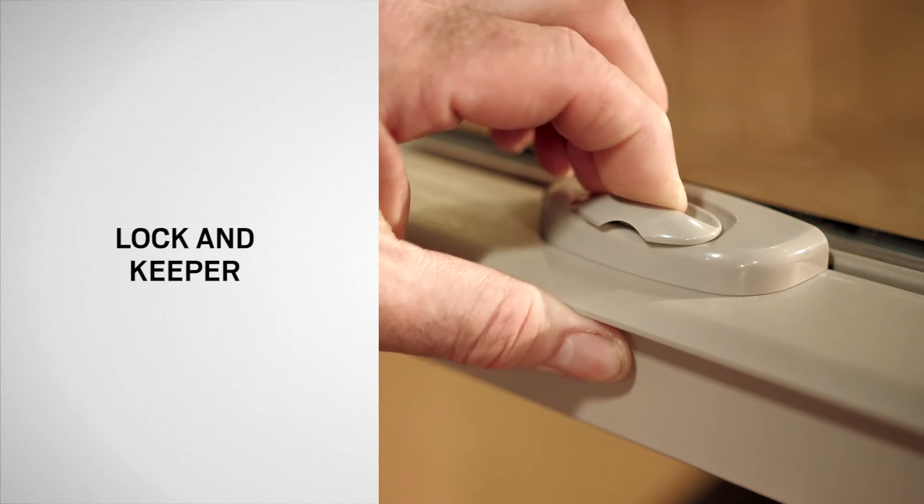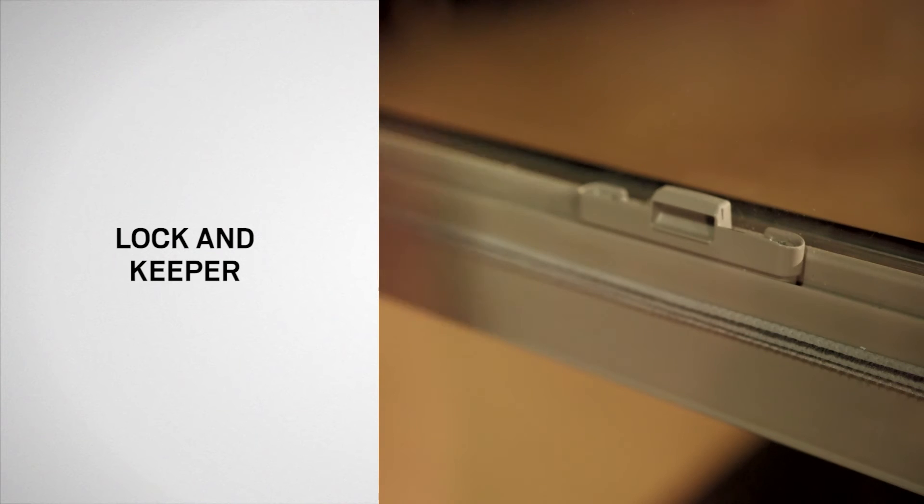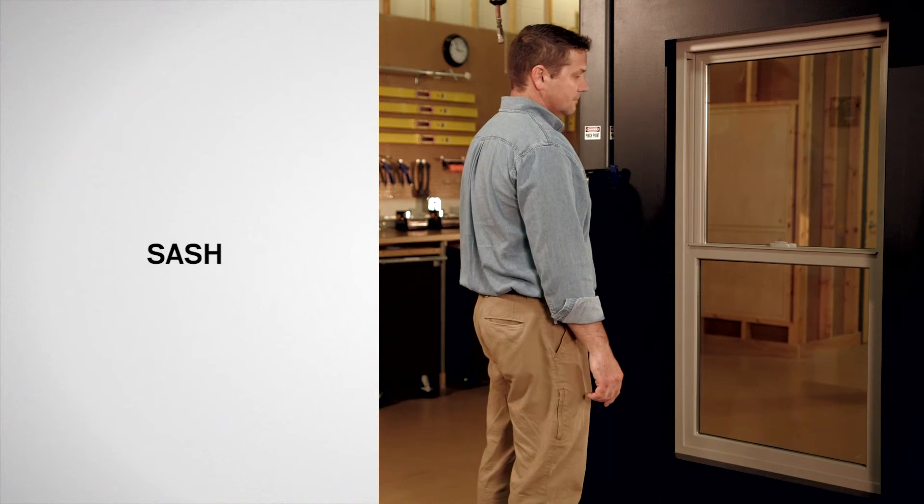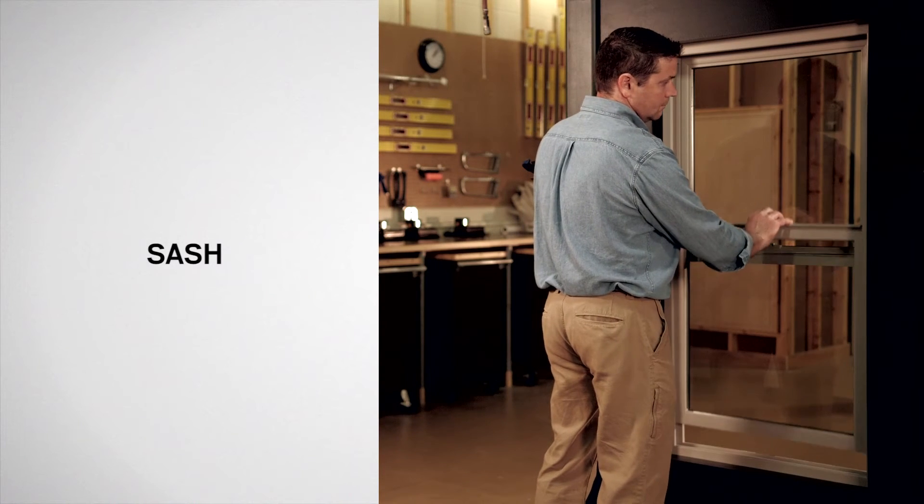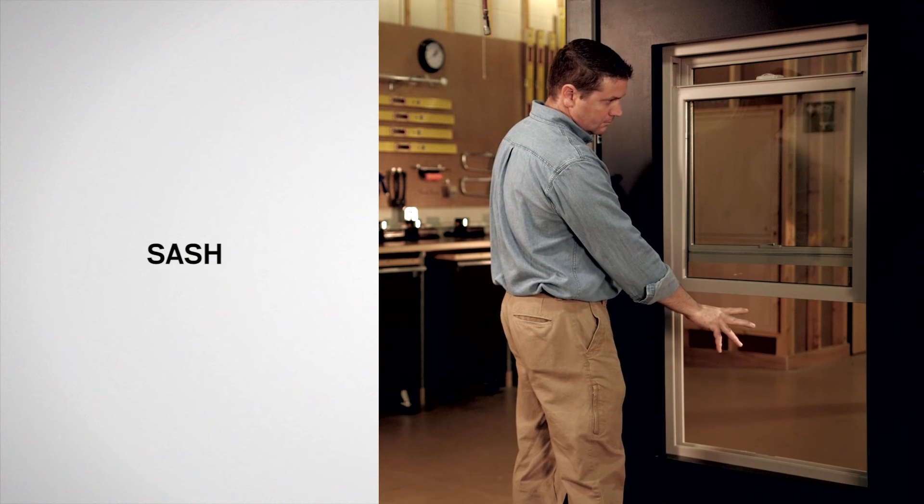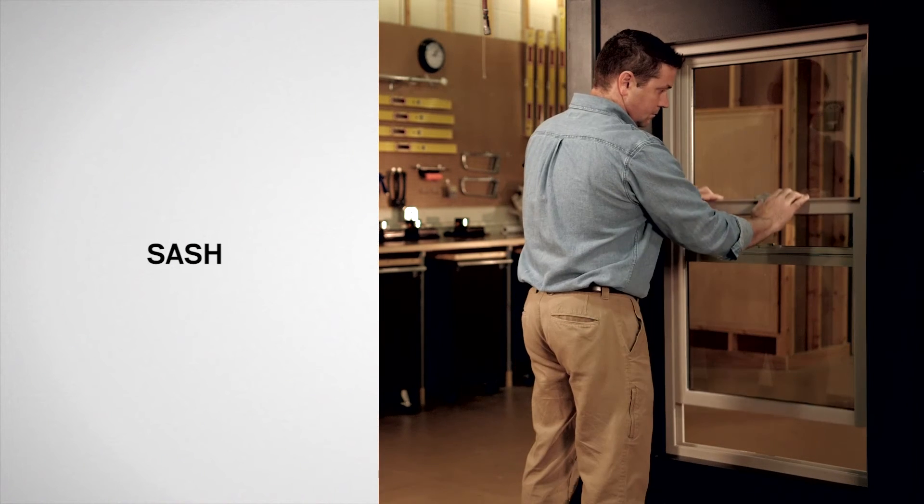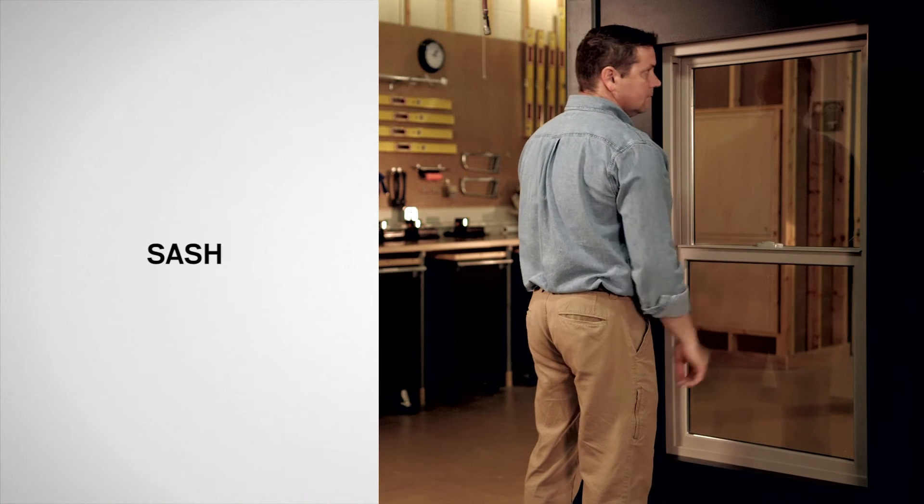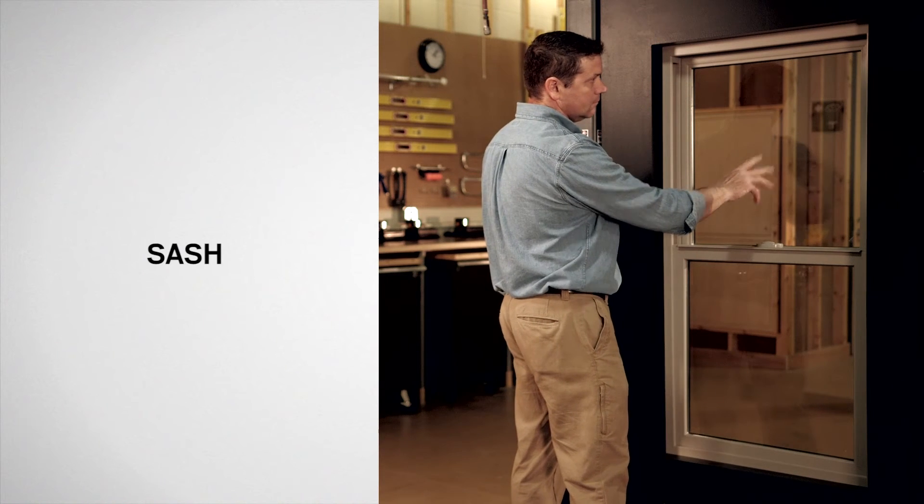The windows also have a lock and a keeper, which is the receiver on the sash that the lock engages. It's easy to identify the sash. The sash closest to you is the bottom sash. On 100 series single-hung windows, this is the only venting sash. The top sash is set back farther into the frame and is fixed in place.